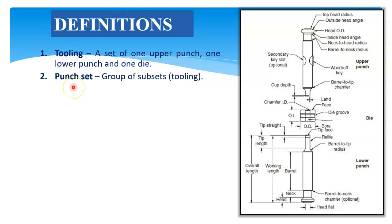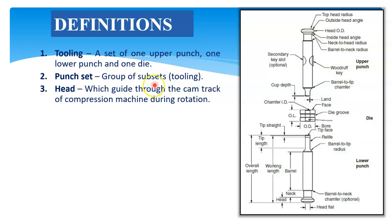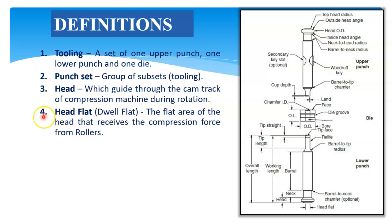Now what is meant by punch set? A punch set is a group or subset of tooling that is called a punch set. The head is the part of the punch which guides through the cam track of the compression machine during rotation. Then the head flat — this is the head flat of the punch, also called dual flat. The flat area of the head flat receives the compression force from rollers.